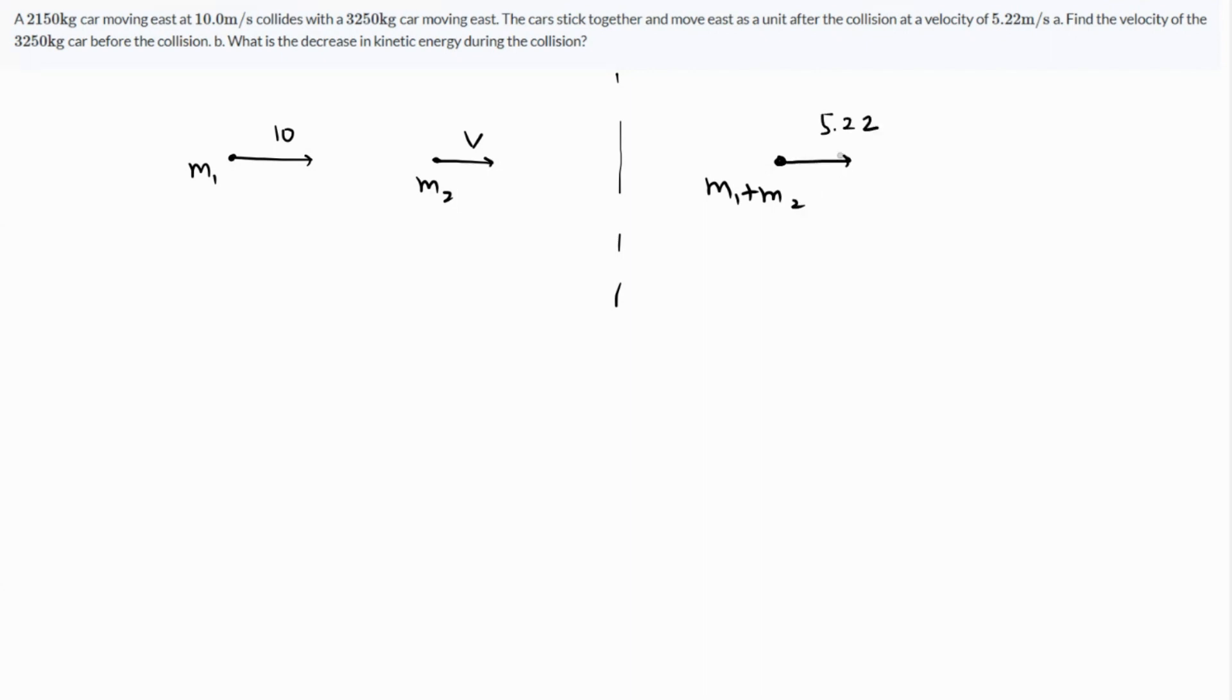We need to find the value of v and the decrease in kinetic energy. Definitely the momentum is conserved, so what is the initial momentum? Initial momentum is m1v1, so 10m1 plus m2v.